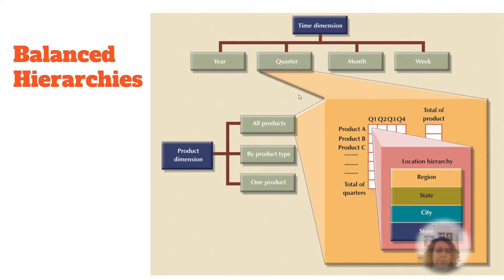The balanced hierarchy is the simplest of the three types of hierarchies. In it, all the dimensional branches have the same number of levels — the same consistent depth.